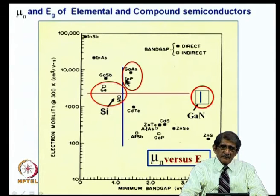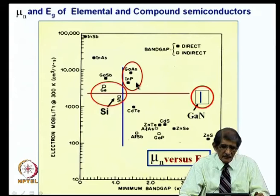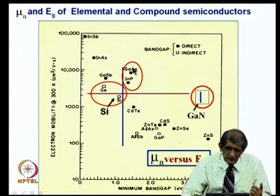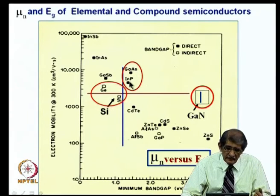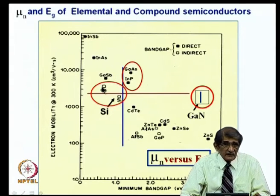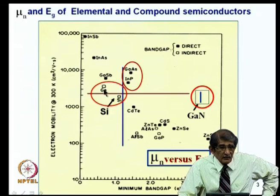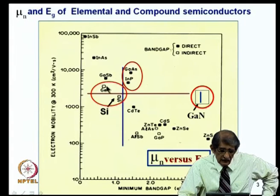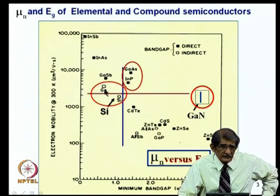Indium phosphide and gallium arsenide have much higher mobilities for electrons compared to silicon — at least 5 to 6 times that of silicon in gallium arsenide, and at least 3 times in indium phosphide. Gallium antimonide has higher electron mobility, but the bandgap is smaller than that of gallium arsenide. Germanium is a potential material because of its high electron mobility as well as high hole mobility, but the drawback is the bandgap is lower. However, when you do quantization and confine the material to thin layers, that bandgap can be improved.